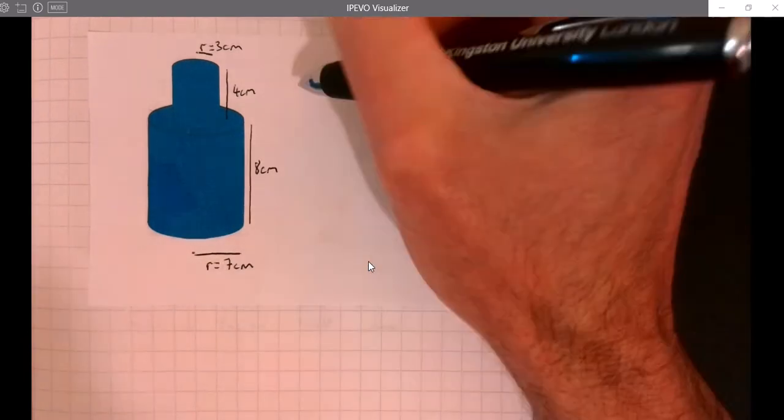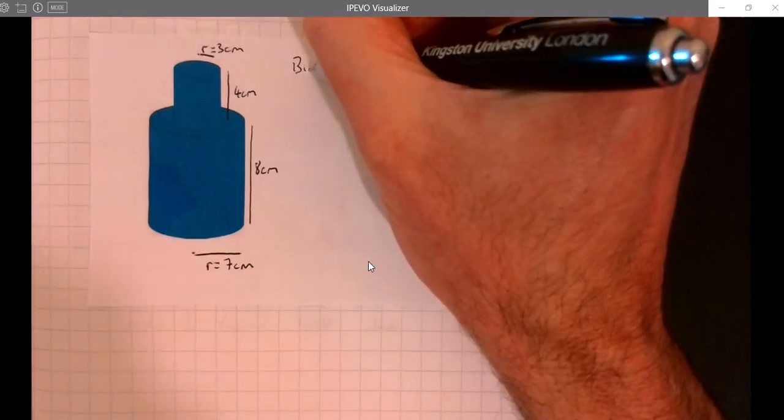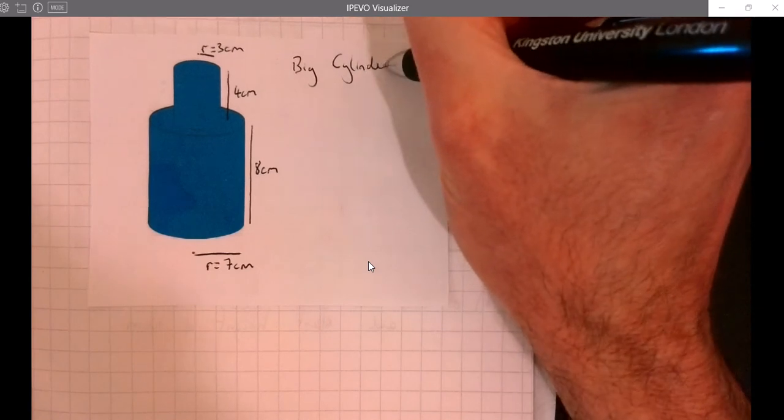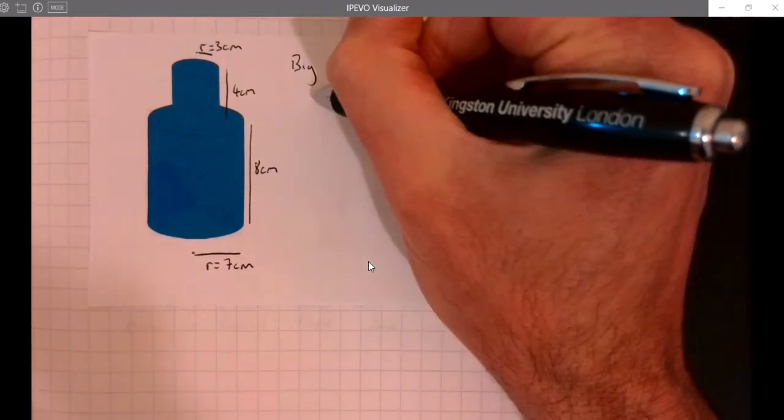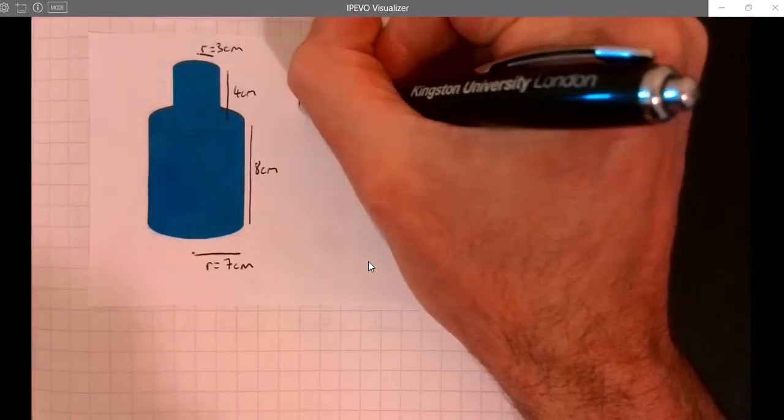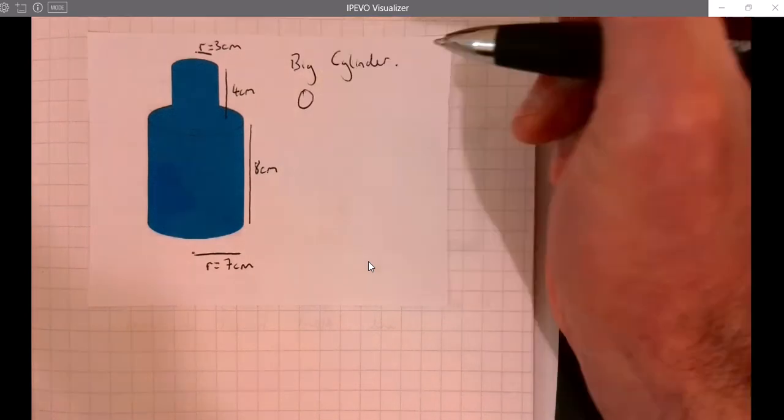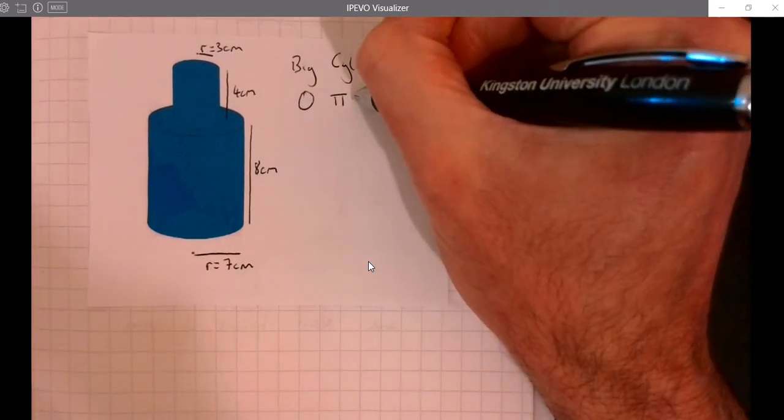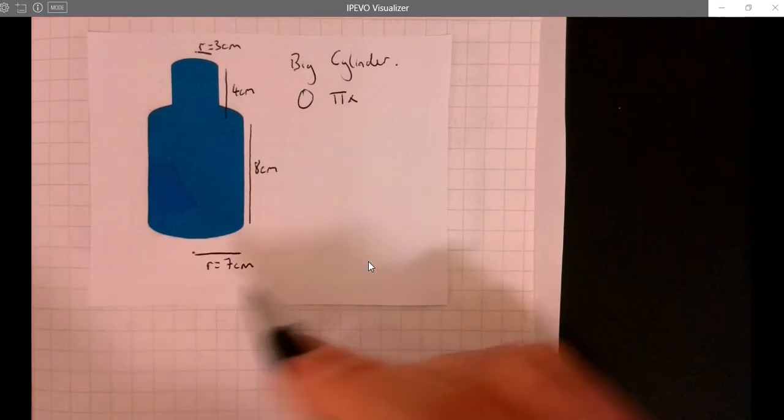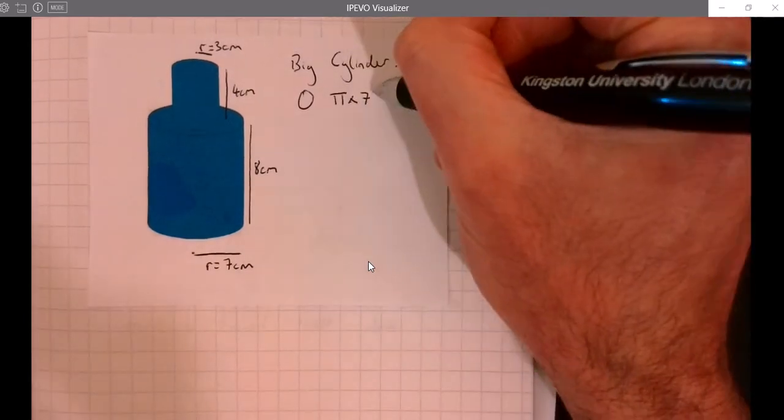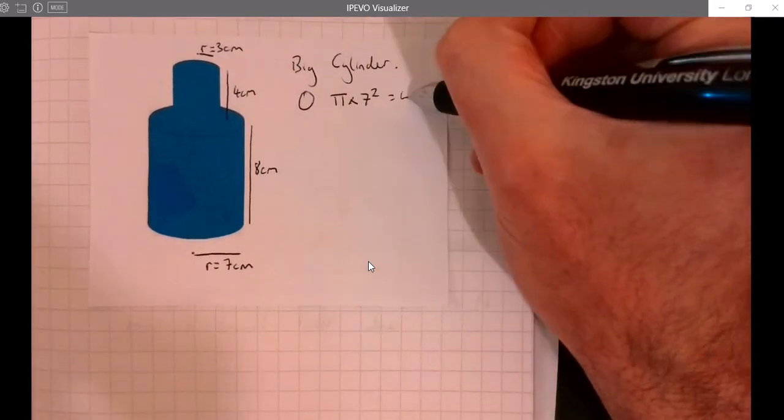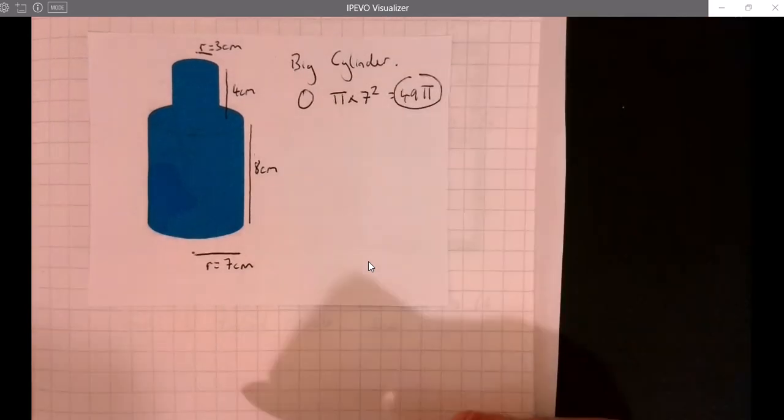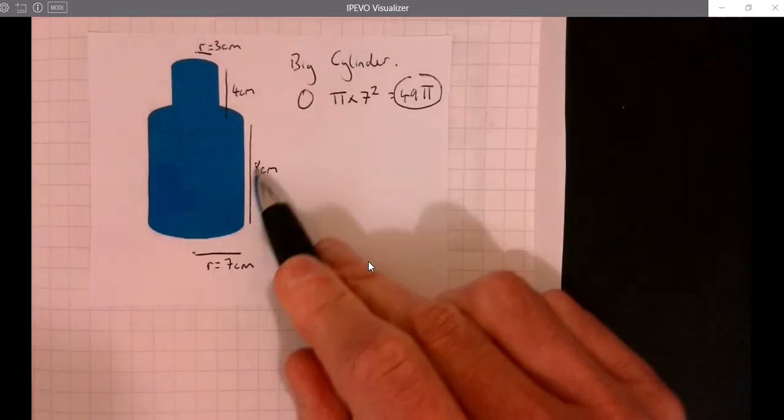If I think about the big one first, the big cylinder, let's think about the circle underneath. We've got the circle underneath, that's going to be π × r² so 7², so π × 7² = 49π. That's part of the answer.